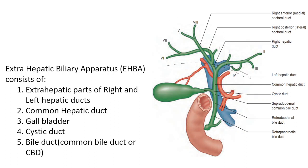These form the intrahepatic part of the biliary tree. Everything outside the liver that carries bile towards the duodenum, or anything intervening in between, is called the extrahepatic biliary apparatus, abbreviated as EHBA.